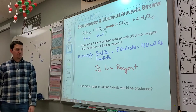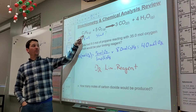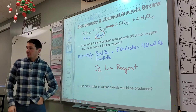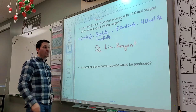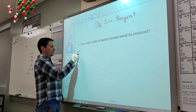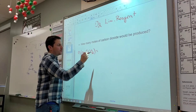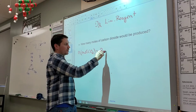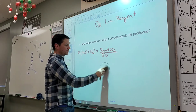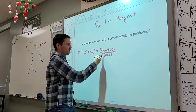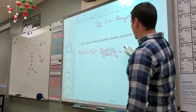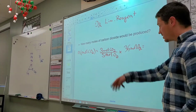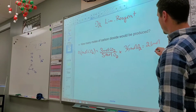How many moles of carbon dioxide would actually be produced? The oxygen runs out first, so we use all 35 moles of oxygen. It's a 3 to 5 ratio — 3 moles of CO₂ per 5 moles of O₂. 35 divided by 5 is 7, times 3 is 21. So we get 21 moles of carbon dioxide.